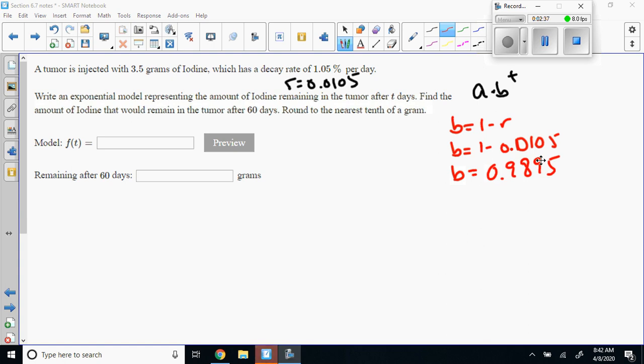The initial amount here is 3.5, so a is going to be 3.5 and t is going to be in days.